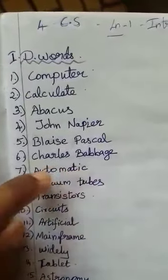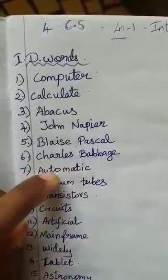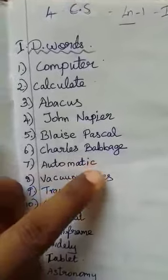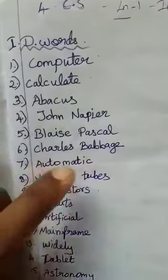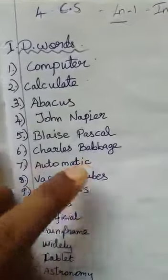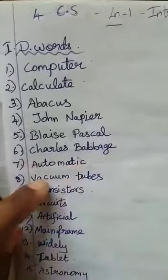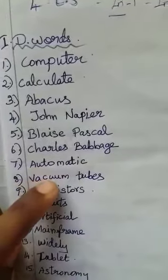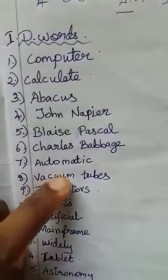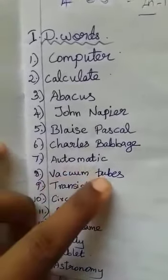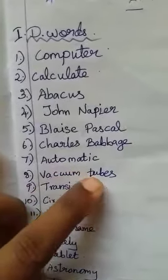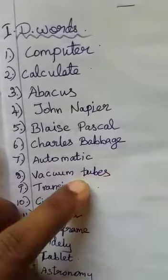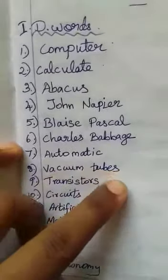Seventh one: automatic. A-U-T-O-M-A-T-I-C. Automatic. Eighth one: vacuum tubes. V-A-C-U-U-M. Vacuum. T-U-B-E-S. Tubes. Vacuum tubes.